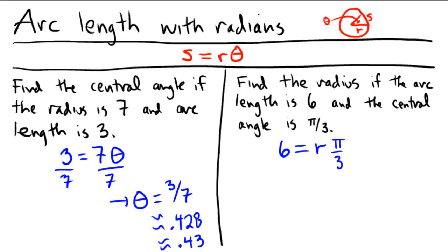So if my goal is to this time isolate the r, because I'm looking for the radius, I'm going to multiply on both sides by the quantity 3 over pi. So there's a 3 over pi that I'm multiplying on both sides, because this is going to cancel, and leave me with r.